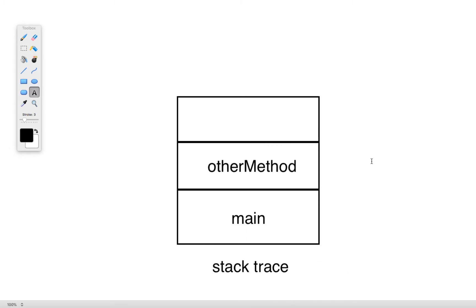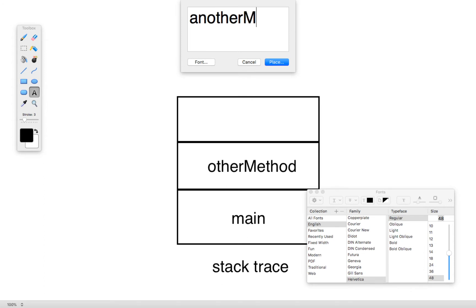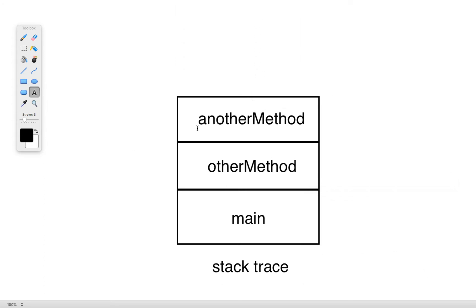Let's say somewhere inside our main method we call some other method — we'll give it a generic name like 'other method.' Then maybe at some other point in time, inside of other method, we call yet another method, placing that on top. We continue this process where every time one of these methods has to call some other method, we continually put them onto this stack — we say we push them onto the stack. Whenever we finish one of these methods and return from it, we do the opposite.